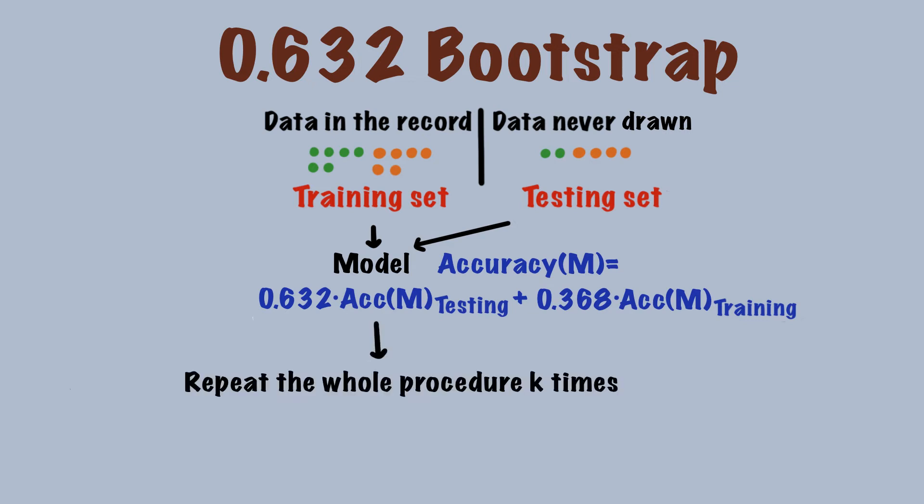Next, we repeat the whole procedure k times. That is, we draw the sample, record it, put it back to the database, split the data into training and testing sets, and calculate the accuracy k times. k is defined by the user, and just like cross-validation, 10 is a popular choice. Last, the final accuracy of the model is the average of all the accuracies. To be more specific, the model is always the same one, but the data changes each time. Alright, that's the basic procedure of bootstrap.